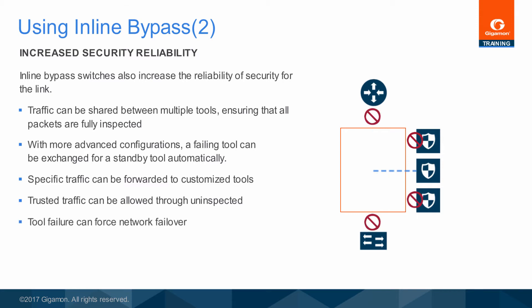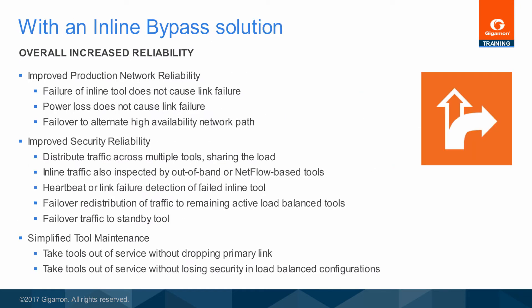When appropriate, any combination of tool failures can be set to force network failover so that a redundant path such as with HSRP or VRRP is activated. In summary, even though inline tools are able to operate satisfactorily without an inline bypass solution, moving inline devices off the production network path via an inline bypass switch increases reliability in many ways.